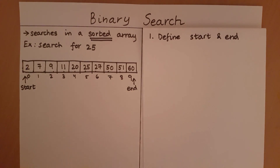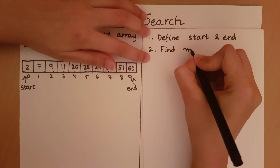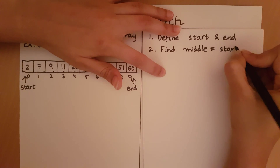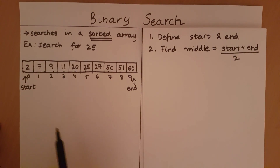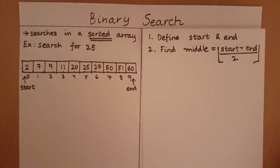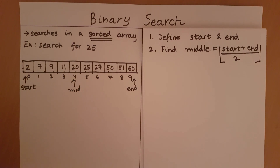The second step is to find the middle index. The middle index is going to equal start plus end divided by 2. In this case, it's 0 plus 9 divided by 2, which is equal to 4.5. An index has to be an integer, so we will take the floor value of this computation. The floor value of 4.5 is 4, so our middle is going to be 4.